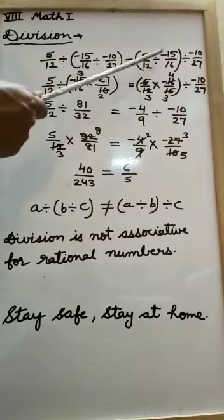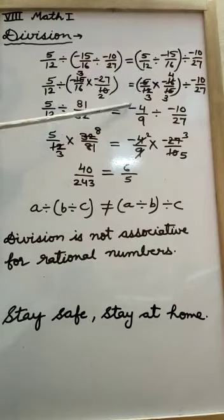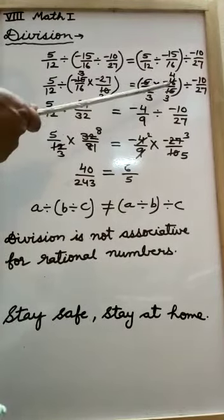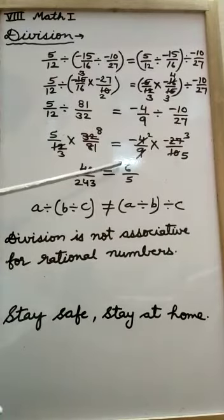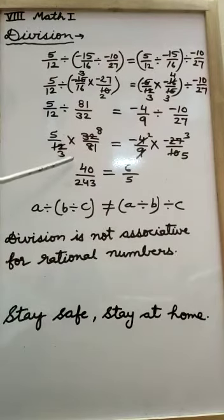On the other side, if we take the first and second rational numbers in a group and divide, we get the answer minus 4 upon 9. This minus 4 upon 9, we divide by minus 10 upon 27, the third rational number, and get the answer 6 upon 5. This 6 upon 5 is not equal to the previous answer, 40 upon 243.